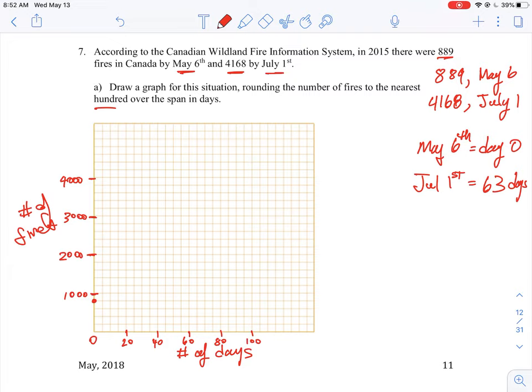So day zero, we had 889. 63 days later, so just beyond that, we had roughly, we could round that up to say 4,200 points here. So let's go in the groups of 1,000. Our point would be about 4,200, so we would have maybe 60, maybe about right there.